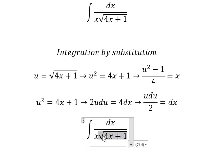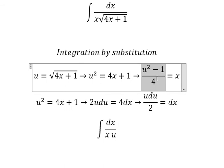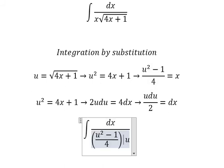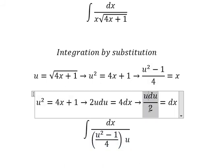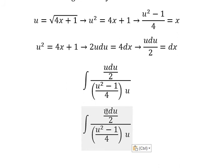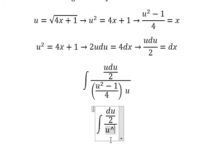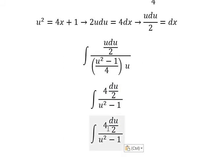So this one we change by u, x we change by this one, dx we change by this one. Now we need to simplify, u and u they cancel. Now number 4 we go to numerator. So 4 divided by 2 you got number 2.